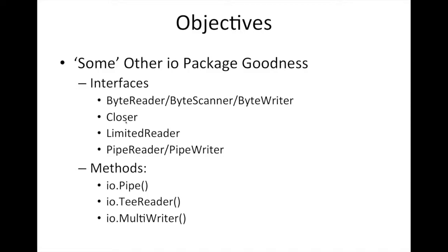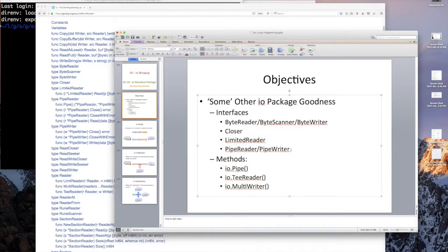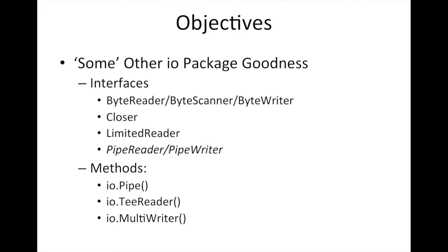So we're going to take a look at ByteReader, ByteScanner, ByteWriter, and talk about Closer, LimitedReader, PipeReader, PipeWriter — we're not going to talk about them directly, but we're going to end up talking about them indirectly. And then we're going to talk about methods IO Pipe, TReader, and MultiReader. We're going to look at an example of two of those, but we'll certainly spend more time talking about one more than the other.